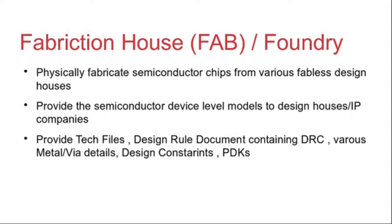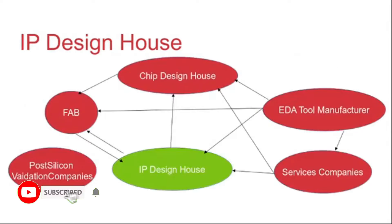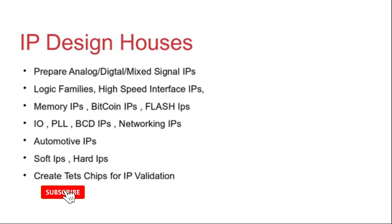A foundry, or fabrication house, physically fabricates semiconductor chips from various fabless design houses. It also provides device-level models to design houses and IP manufacturers — primarily as files including tech files, design rule documents containing DRC, metal and via details, design constraints, and PDKs. So the fabrication house manufactures the IC on top of silicon. The IP design house is connected to the fab because when you order the PDK from the foundry, you also need compatible IPs. IP design houses manufacture different types of IPs: analog, digital, and mixed signal.